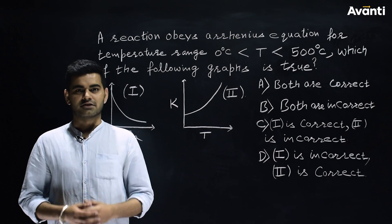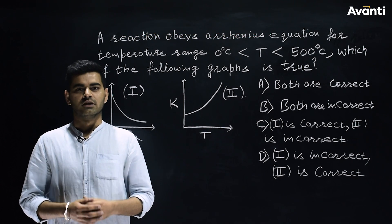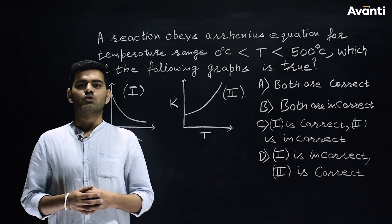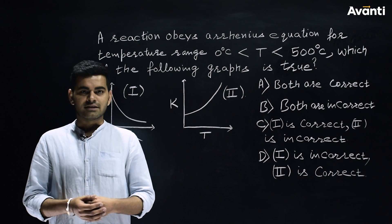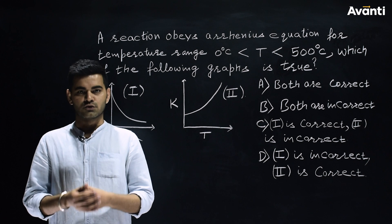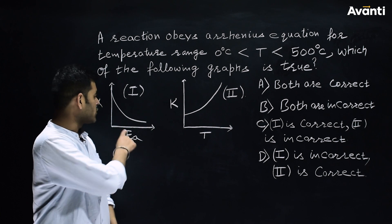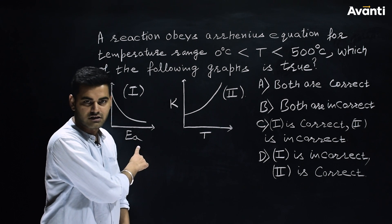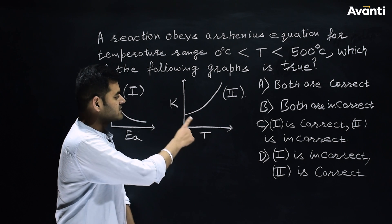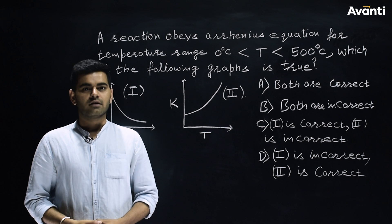Let's take another illustration. A reaction obeys the Arrhenius equation for the temperature range 0°C to 500°C. In this question, you have to tell which of the following graphs is true. In graph 1, the variation of rate constant is given with activation energy, and in graph 2, the variation of rate constant is given with temperature. You have 4 options.